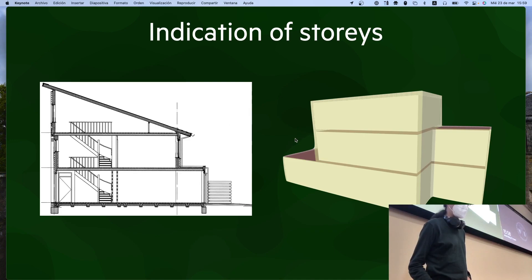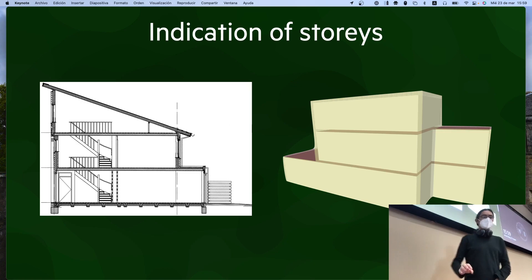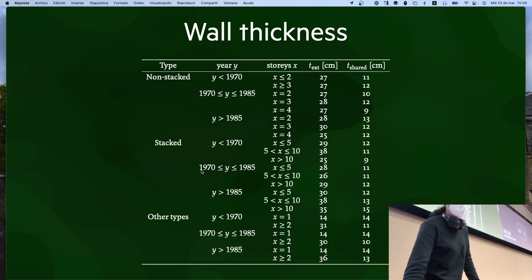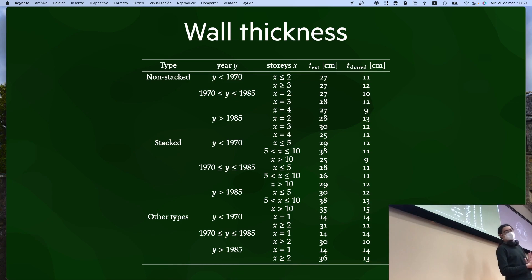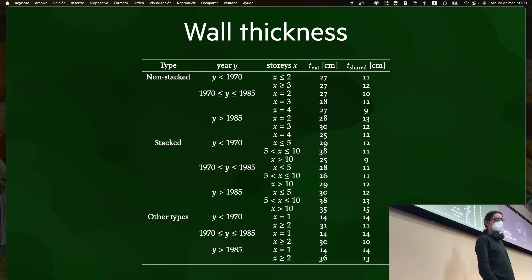Another external cue: a ground-floor extension that protrudes from a building most likely aligns exactly with the floor shape of the storey above. Using such cues, you can estimate the indoor geometries. Wall thickness is also important — you need to offset the indoor geometry inward. Ruland analyzed building plans and found typical values depending on building age and type, categorizing them as stacked (high-rise) and non-stacked (houses), with median values for exterior walls and shared walls between buildings.